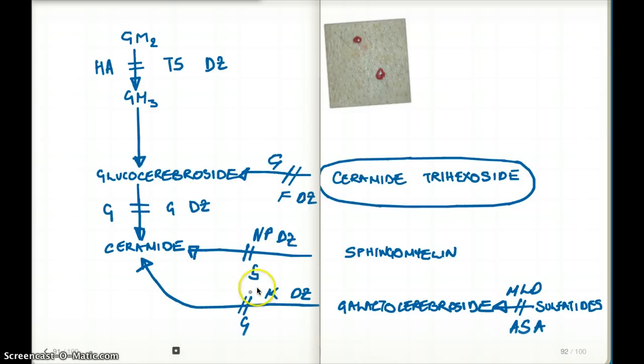This pathway can be confusing because the names are very similar. That's something we have to practice and memorize. The patient could not metabolize ceramide trihexacide. Don't confuse this with ceramide—it's ceramide trihexacide.